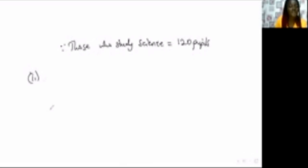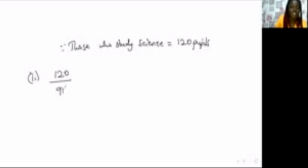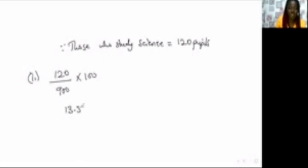Then part (ii): find the percentage for Science. You know Science = 120. So it is 120 over 900 multiplied by 100. Simplifying this gives us 13.33%. That is the percentage, so include the percent symbol.